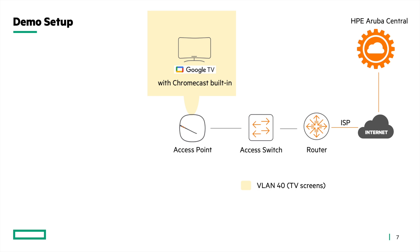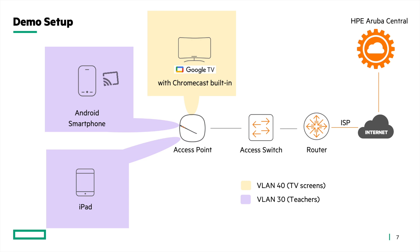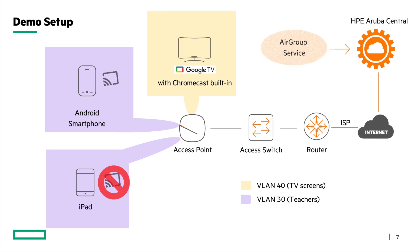An Android phone will be connected to the same access point on VLAN 30 via an SSID called Teachers, and an iPad will also connect to the same SSID on the same VLAN. We will cast a video from the phone to the TV using Google Cast. At the same time, we will see how AirGroup can be used to prevent the iPad from casting video to the TV using Google Cast.